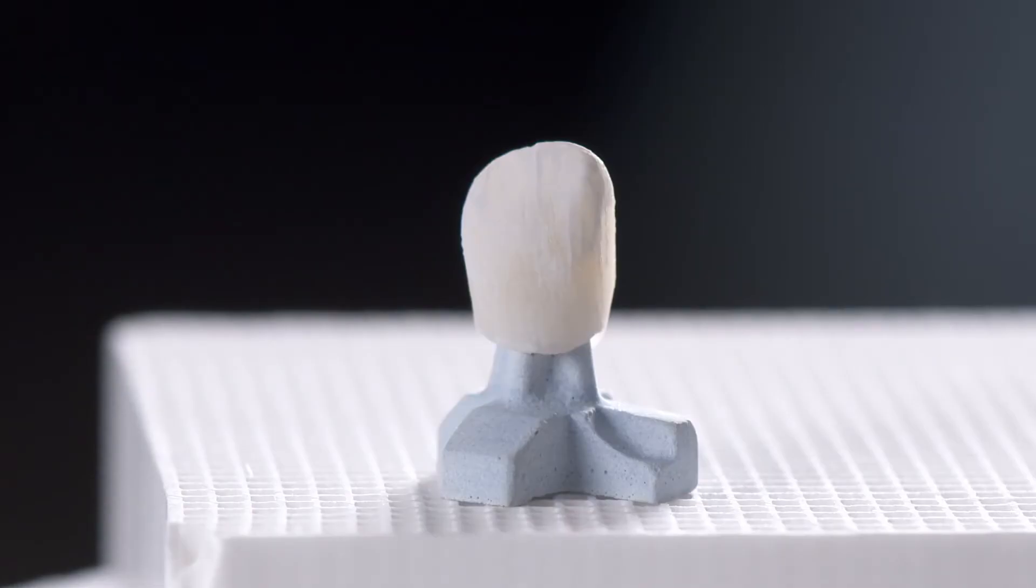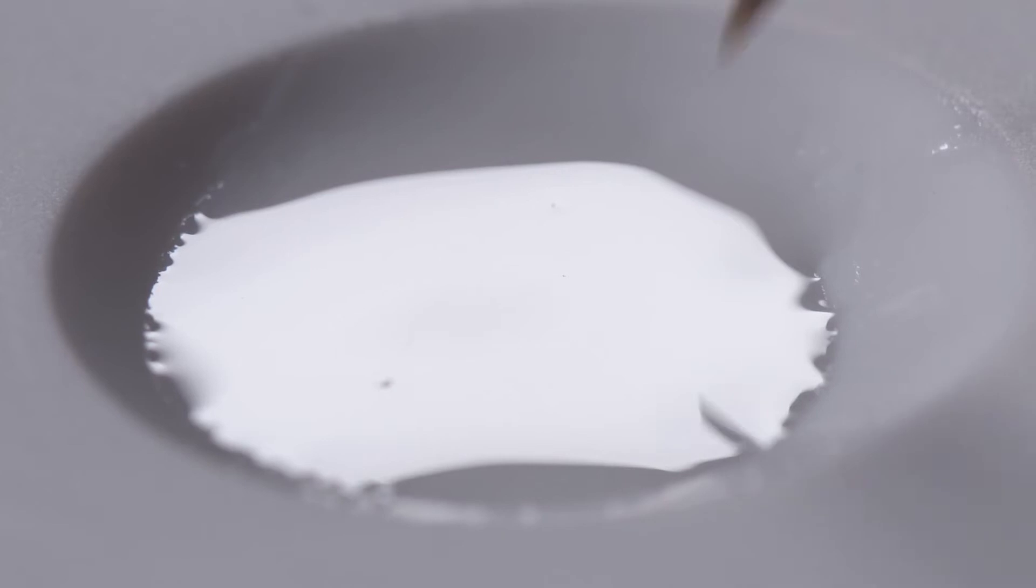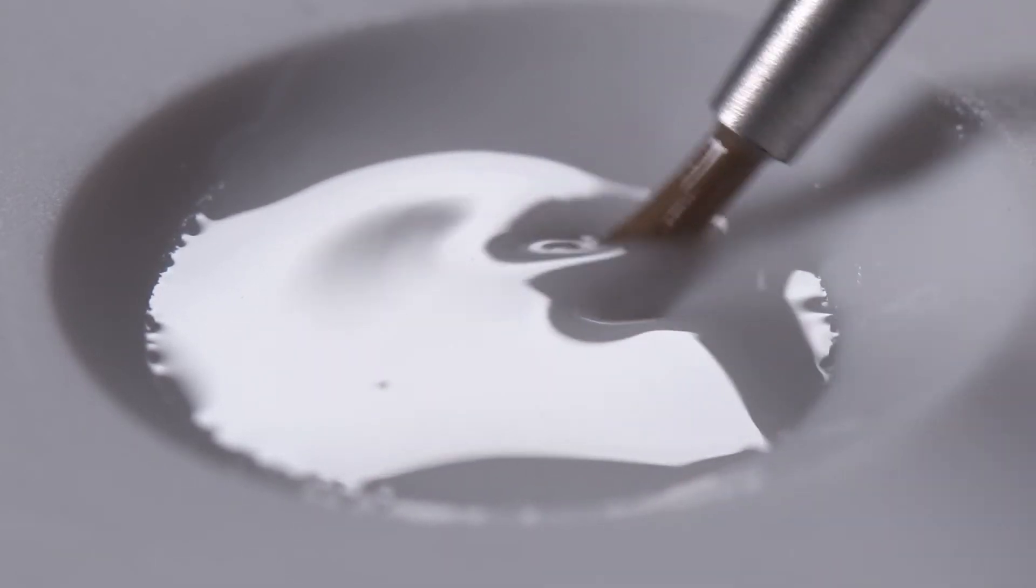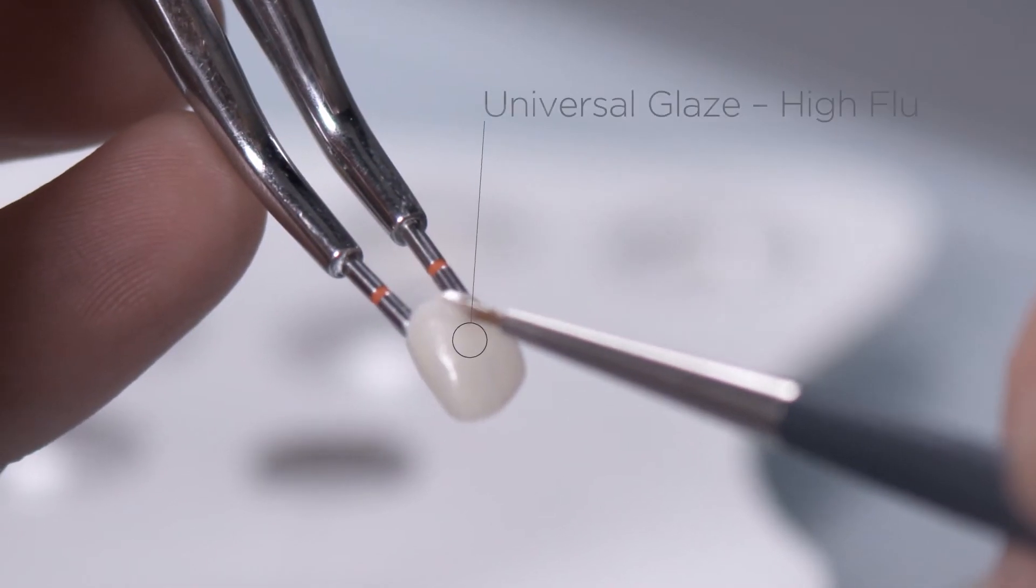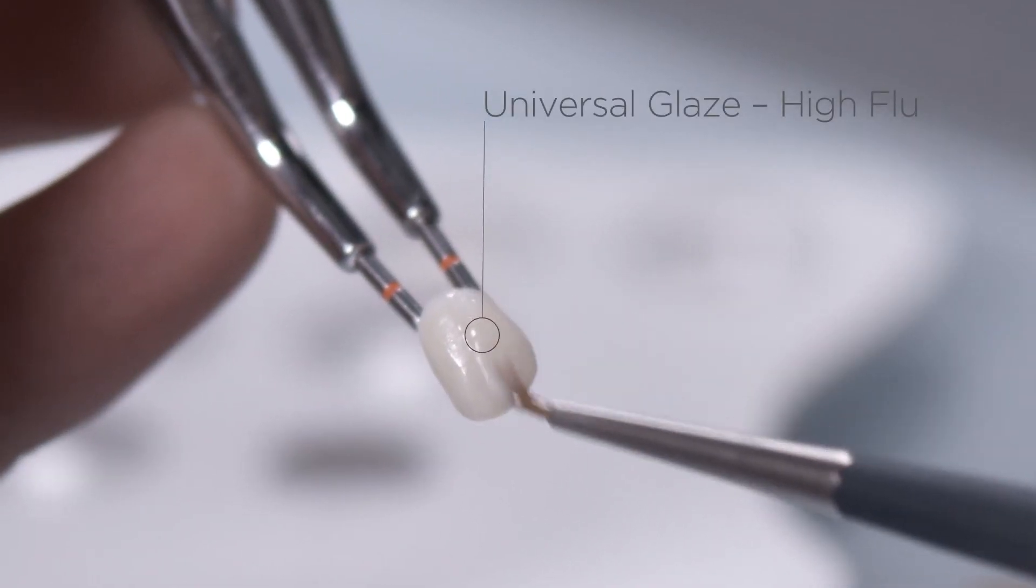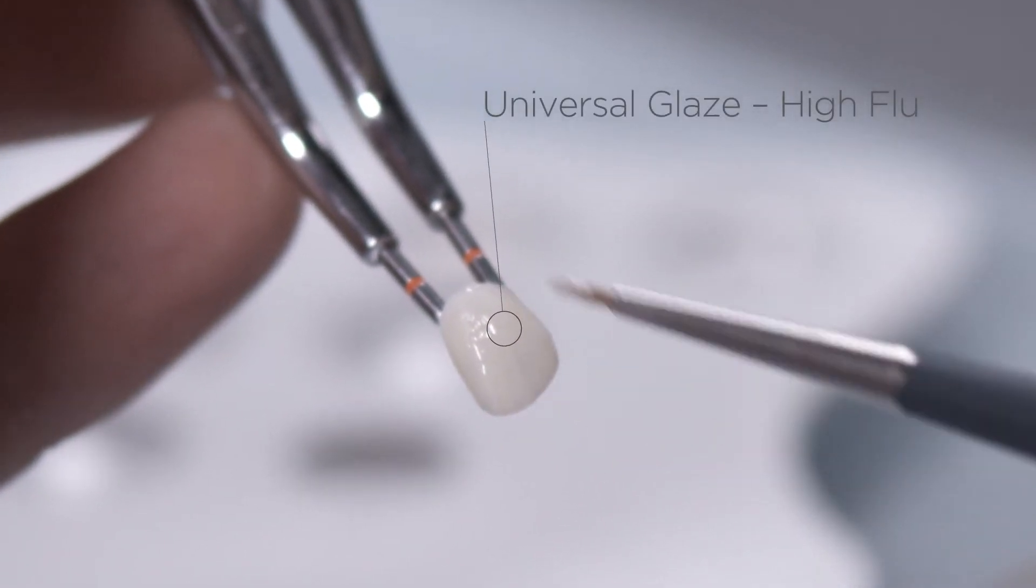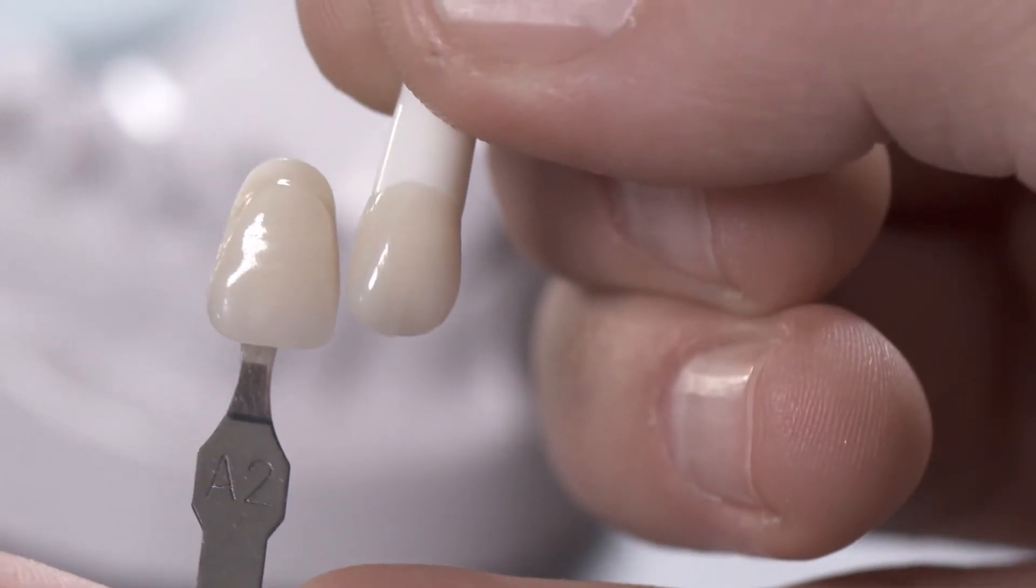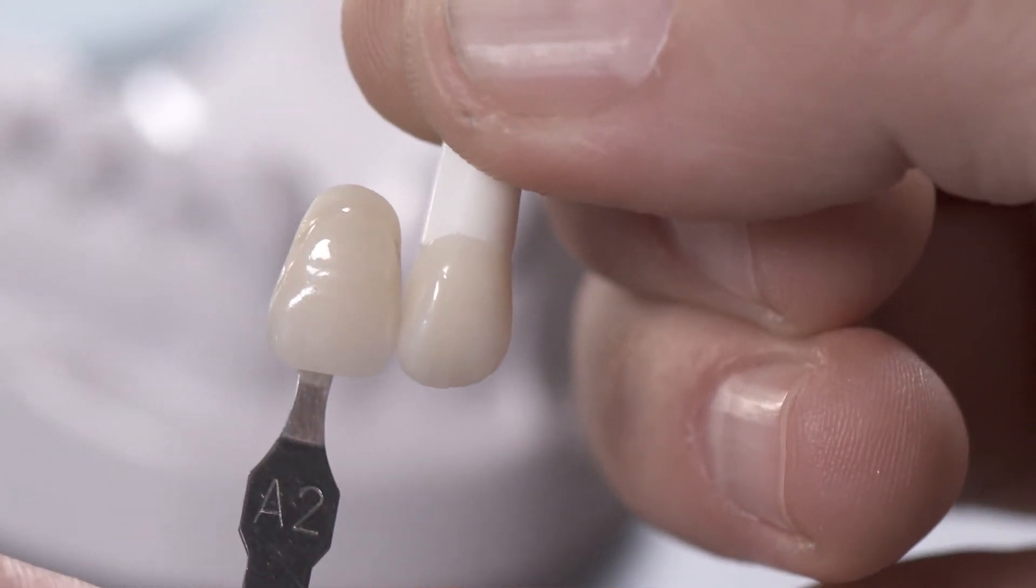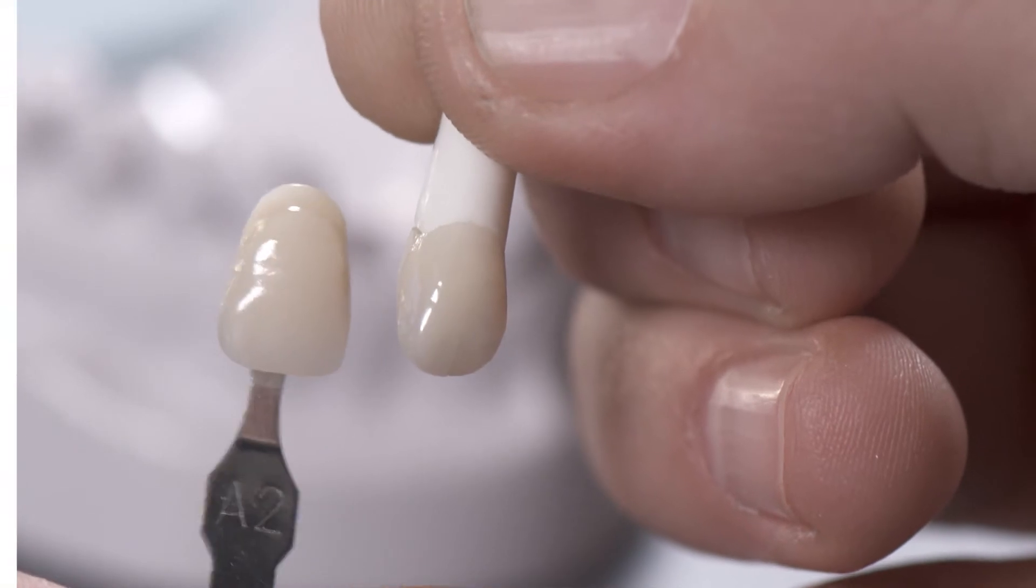After stain firing, only High Flu Universal Overglaze is applied across the monolithic restoration. The final shade check against the shade tab confirms the quick and easy shade reproduction with great aesthetics.